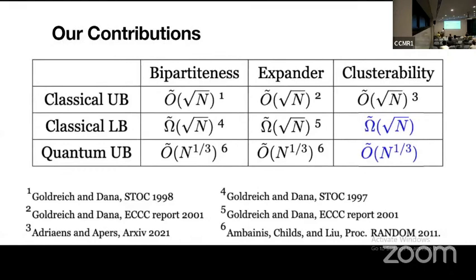So our contributions are: first, we provide the classical query lower bound, which implies this classical algorithm is near-optimal. Our second contribution is we show quantum advantage for this problem by providing an n-to-the-one-third quantum algorithm.